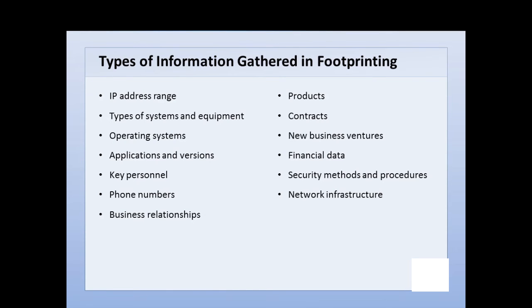As a hacker, you may ask yourself what kind of information you're after. Each piece of information gathered can help plan out an attack, identify different attack vectors, tell us where weaknesses are, and possibly tell us where the defenses are that we may have to get around. Some things we're looking for in footprinting are an IP address range for their network, what types of computer systems and equipment such as routers and firewalls they may have.